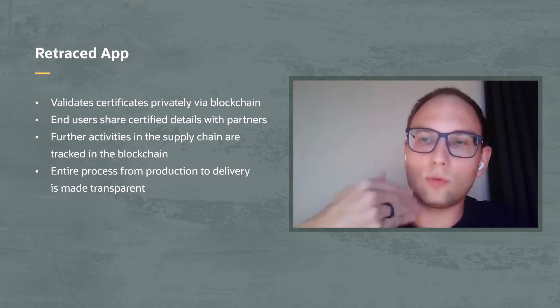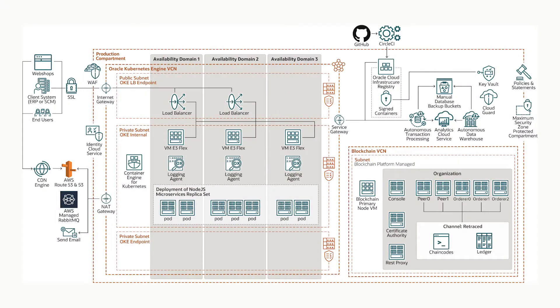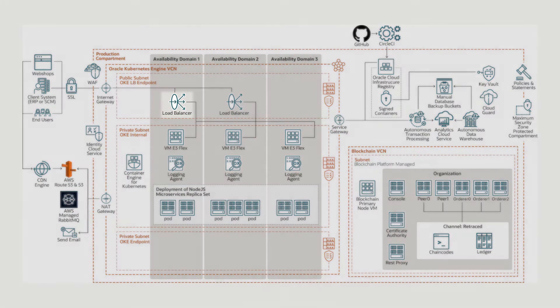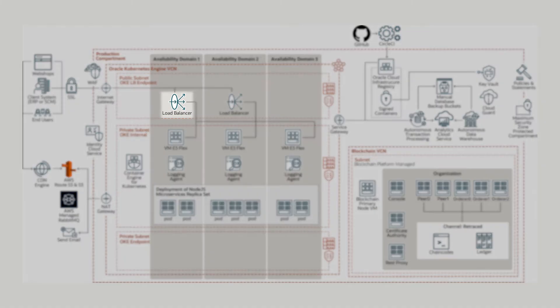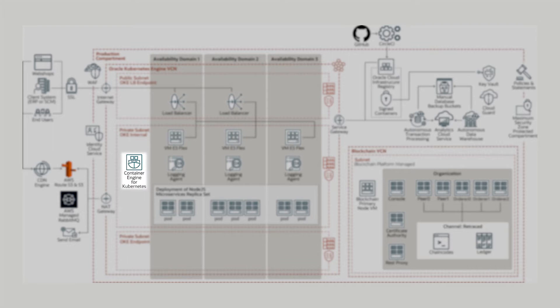What is happening once a request is made, it's actually going towards our load balancer at API.retraced. It is resolved towards one of the compute instances randomly by Kubernetes, which is distributing the traffic automatically. And then within each compute instance, it's redistributing this traffic automatically towards one of the pods available. And what is a pod?